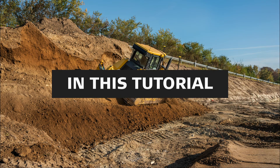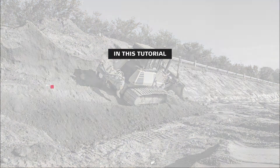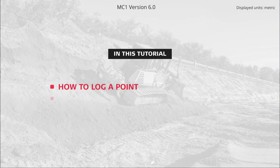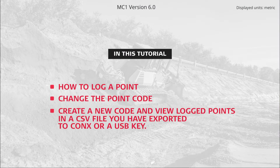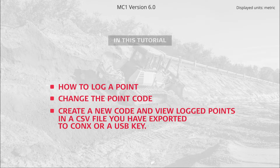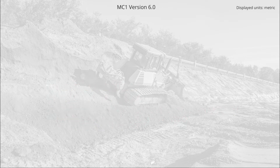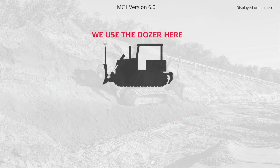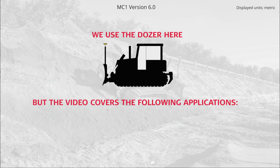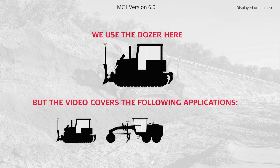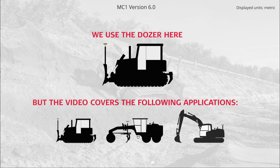In this video you will learn how to log a point, change the point code, create a new code, and view log points in a CSV file you have exported to Connex or a USB key. We use the dozer here but the video covers the following applications: Dozer, Grader, and Excavator.